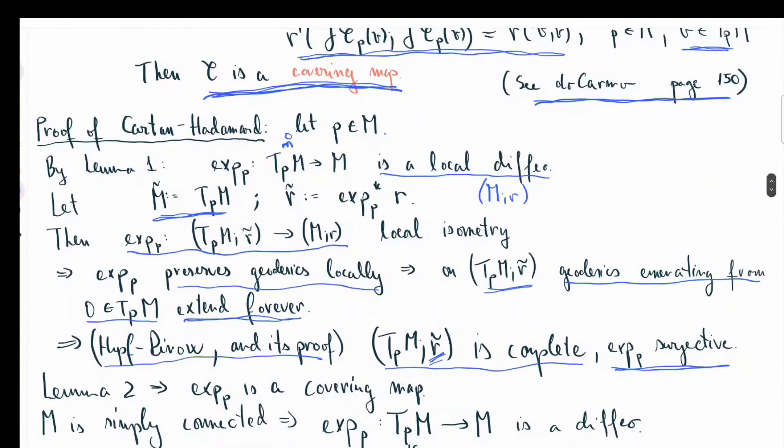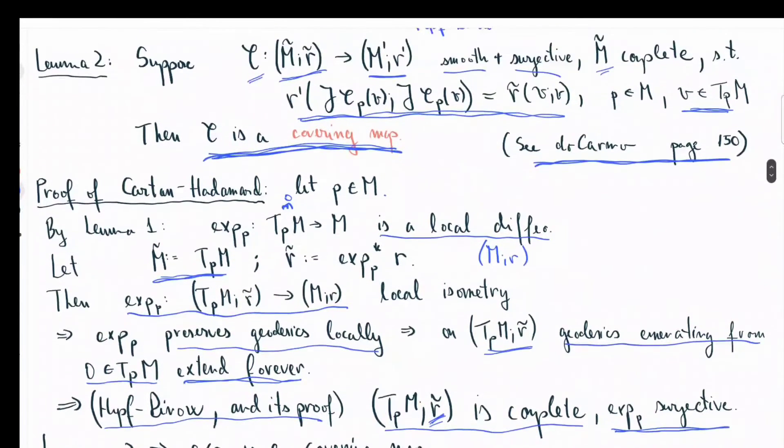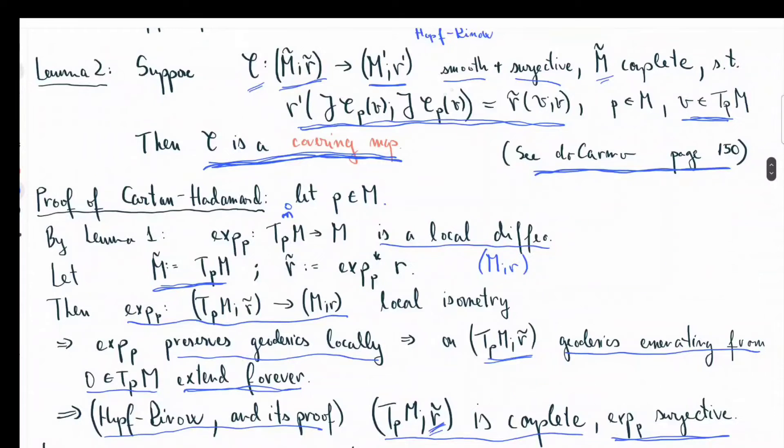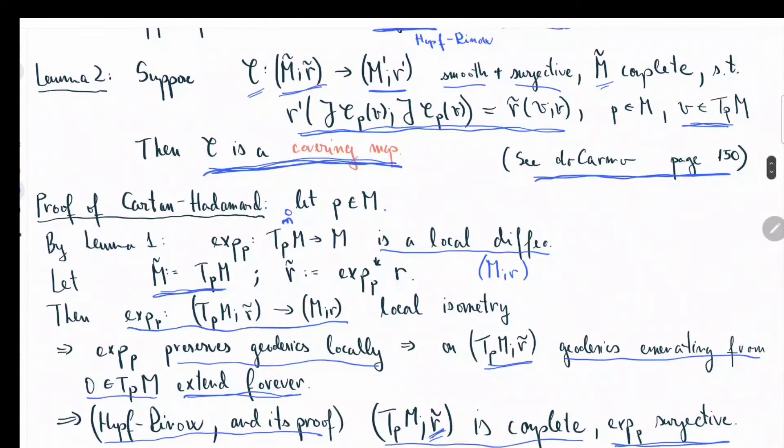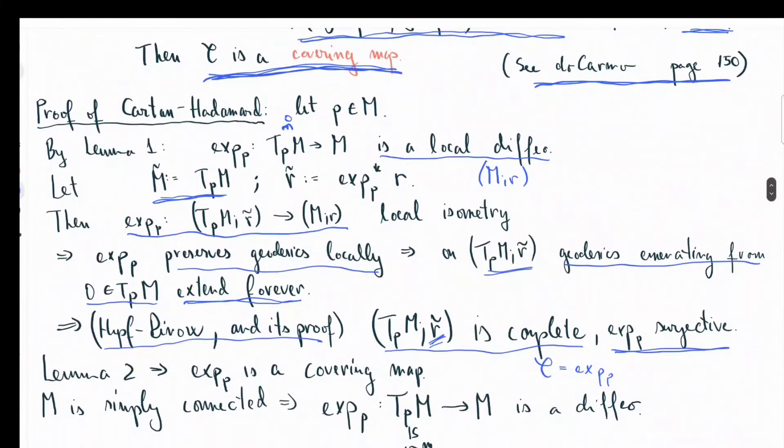So what do we have now? We're exactly in the situation of lemma 2. We have a smooth and surjective map, exp, so phi is actually exp here, between two Riemannian manifolds. The first one is complete. By construction, we have a local isometry. So what we get from lemma 2 is that exp is a covering map.